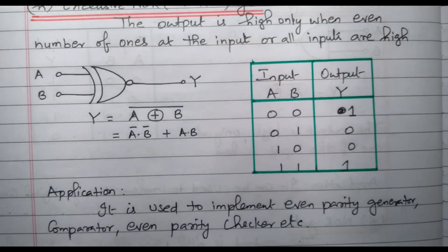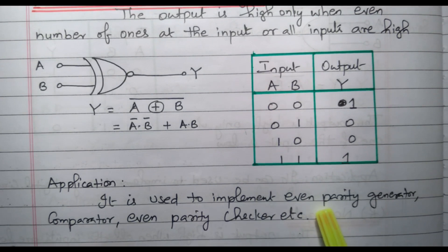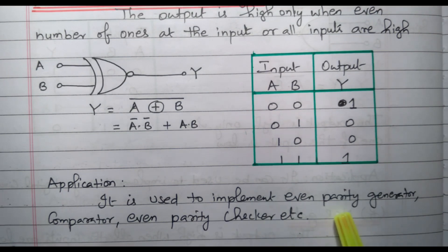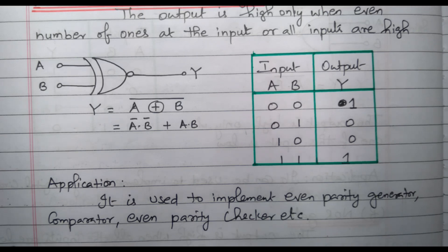The XNOR gate is used to implement even parity generator, comparator, and even parity checker. In this video we discussed the derived gates — NAND gate and NOR gate, which are also called universal gates, and the special type gates XOR gate and XNOR gate. Subscribe the channel for more videos and notifications. Soft copy of this material is available in the drive; the link is given in the description box. Thank you for listening.